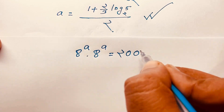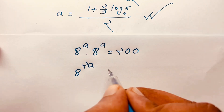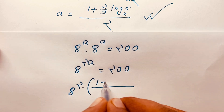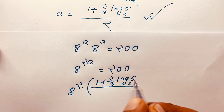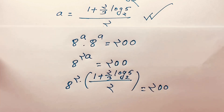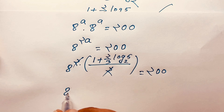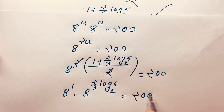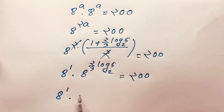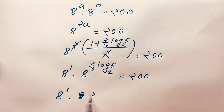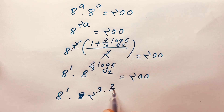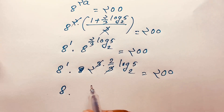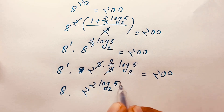Now let's verify: a^a times a^a equals 200, which simplifies to a^(2a) equals 200. Substituting 2a = 1 + (2/3)·log₂5, the 2s cancel and we get 8^1 times 8^((2/3)·log₂5) equals 200. Writing 8 as 2³, the exponent becomes 8 times 2^(2·log₂5) equals 200.